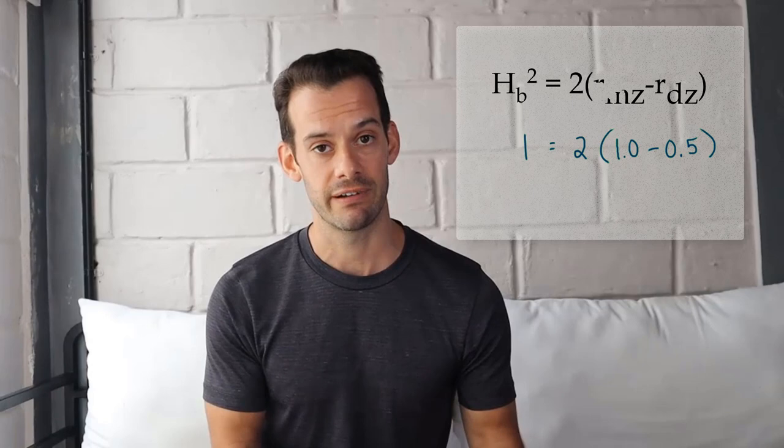Of course these are extreme examples and we won't really see this in real life. Let's look at some actual research and practice using Falconer's formula. First, we can look at Kenneth Kendler et al.'s 2006 study on Swedish twins and liability of lifetime major depression. In this study they found a concordance rate for monozygotic women of 0.44 and for dizygotic women of 0.16.